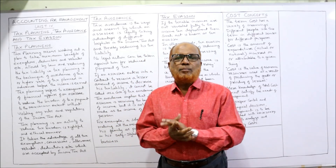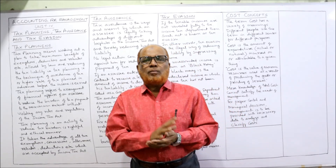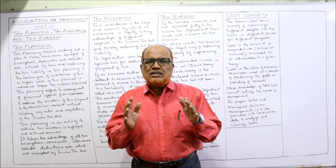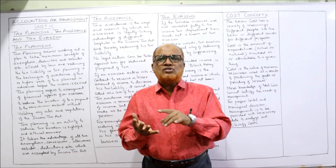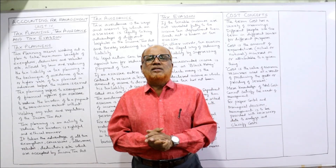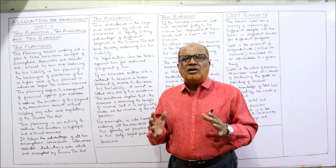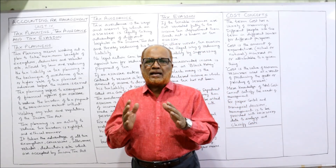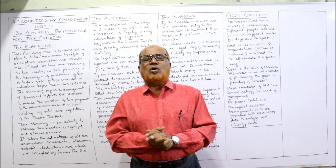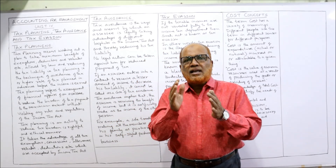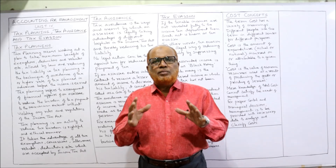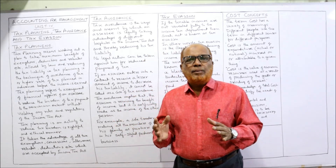In this unit number four, we have four topics in total. The first topic is the cash flow statement — I have explained it in detail in many previous videos and we have solved some ten problems on making the cash flow statement. The second topic is the meaning of tax planning, tax avoidance, and tax evasion. Then we have the meaning of the term cost, the cost concept, classification of cost, and lastly the cost sheet.